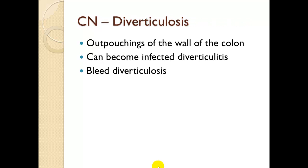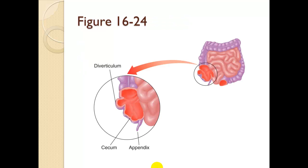Clinical note: diverticulosis. Out-pouchings of the wall of the colon can become infected, which gives us diverticulitis. We can also get bleeding diverticulosis. These little out-pouchings can trap fecal material that builds up, inflames the area, and causes pain.